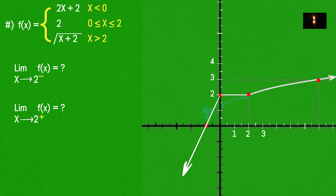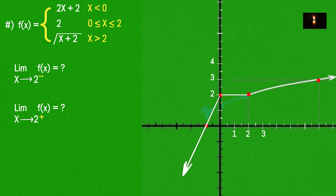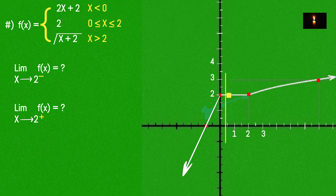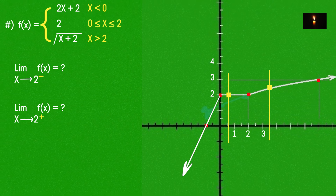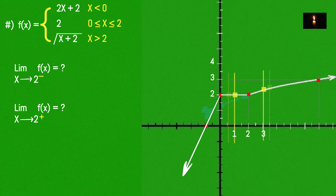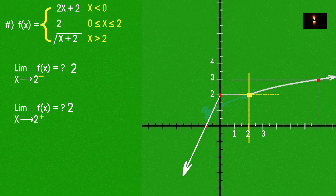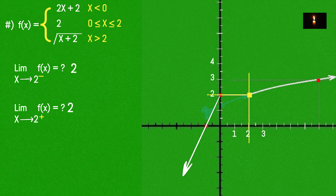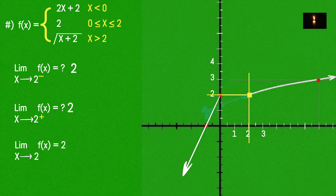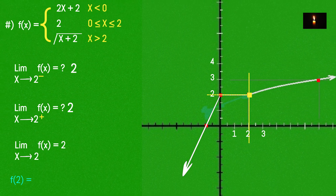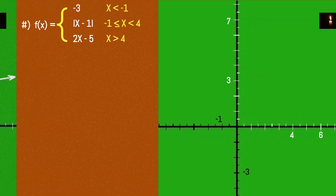Now it's time to check: limit x approaches 2 from the left and from the right. Whatever color is coming in from the left and right — both approach x = 2. The limit x approaches 2 equals 2, and the function value f(2) also equals 2.